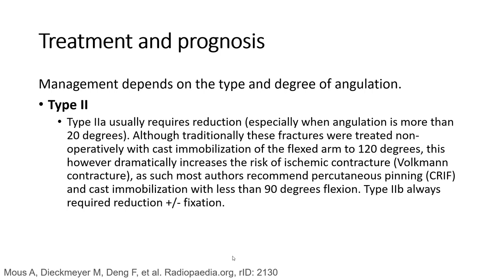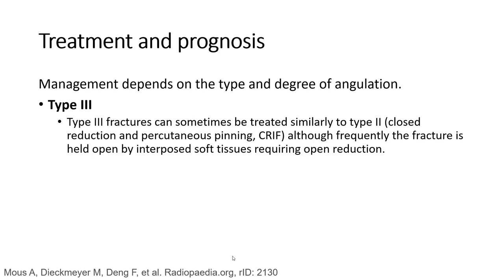Type 2B already requires reduction plus or minus fixation. Type 3 fractures can sometimes be treated similarly to Type 2B, although frequently the fracture is held open by interposed soft tissue, requiring open reduction.